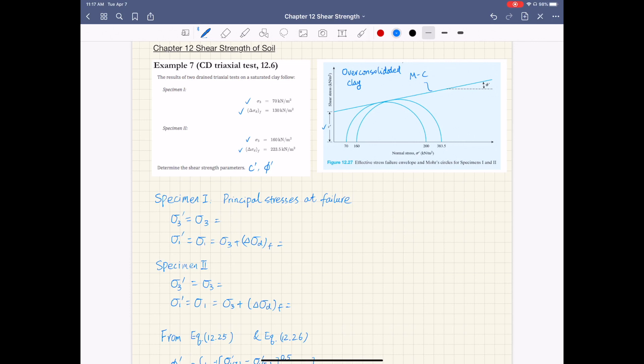And so first, let's look at specimen number one. The principal stress at failure: sigma 3 prime is equal to sigma 3, and this is 70 kN per meter square. So this is given to you. This is for drained, again, this is for drained test. That's why you have the effective and the total stress being the same.